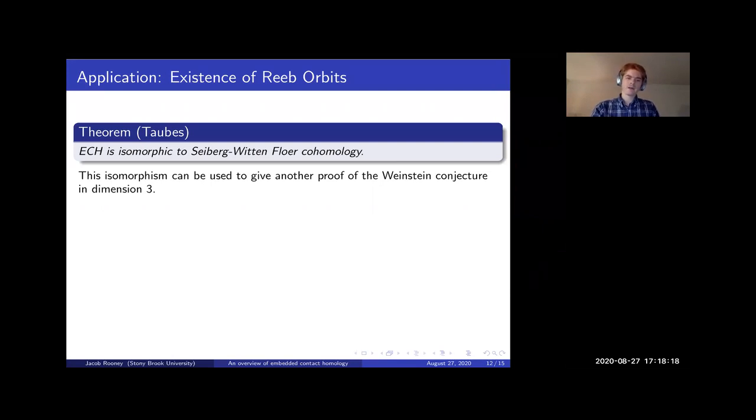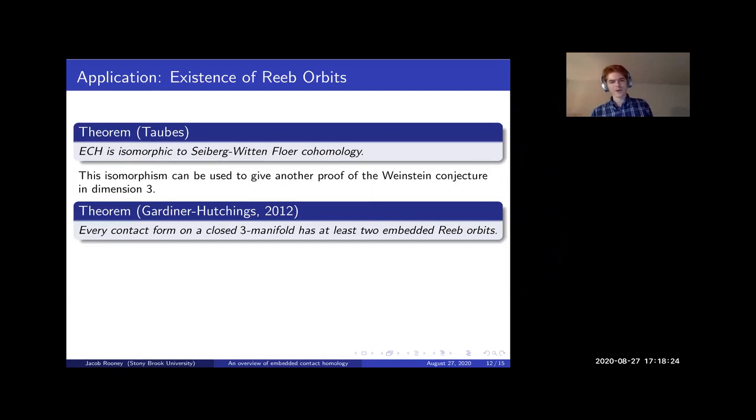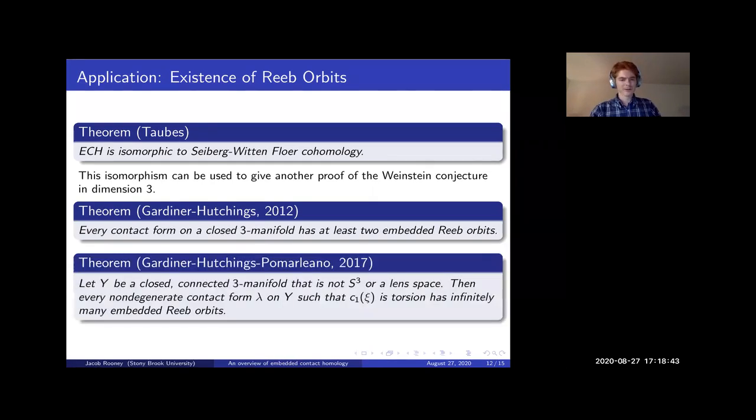If you ask the question, how many Reeb orbits do there have to be on a given contact manifold? From 2012, Dan Cristofaro-Gardiner and Michael Hutchings proved that every contact form on a closed three manifold has at least two embedded Reeb orbits. This is the minimum number. We saw an example of that earlier with the ellipsoid where it had exactly two. And you can do even better. So more recently, Cristofaro-Gardiner, Hutchings, and Pomerleano proved that if your three manifold is not a sphere or lens space, and you have a certain kind of contact form, then you actually have infinitely many distinct embedded Reeb orbits.